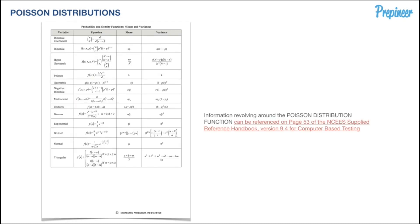Here's a page from your NCES reference handbook—this is version 9.4 for computer-based testing. If you hone in right there on your reference handbook, you'll see you are given the formula, the equation for the Poisson distribution.